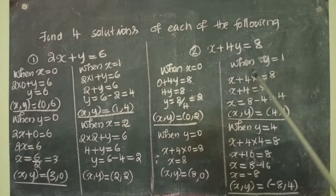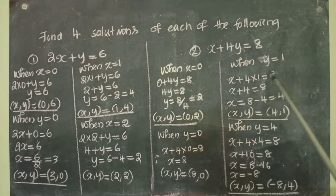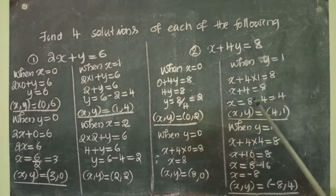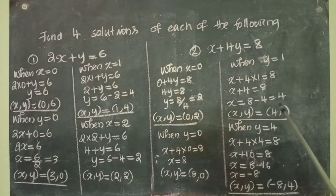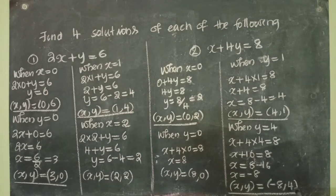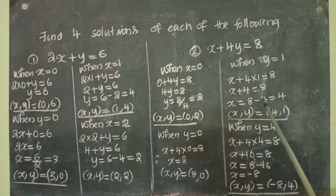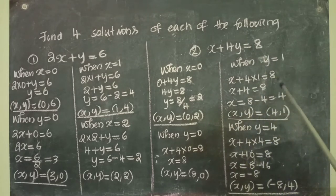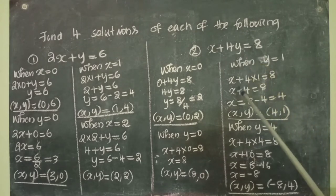Then when y equal to 1: x plus 4 into 1 equal to 8, x plus 4 equal to 8, x equal to 8 minus 4, that is equal to 4. Therefore (x, y) equal to (4, 1). Then when y equal to 4: x plus 4 into 4 equal to 8, x plus 16 equal to 8, x equal to 8 minus 16, x equal to minus 8. Therefore (x, y) equal to (minus 8, 4). You can find any solutions — the solution can be a fraction also.